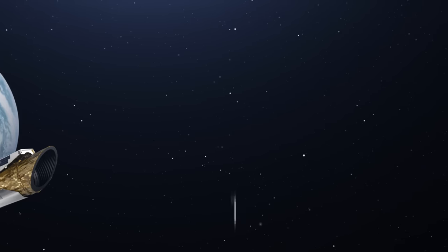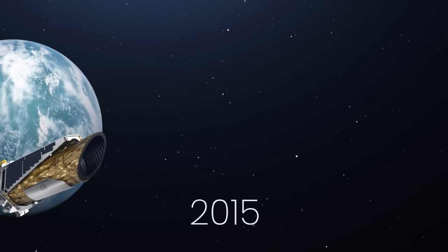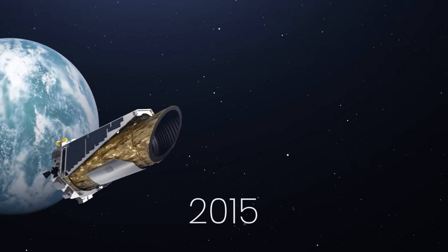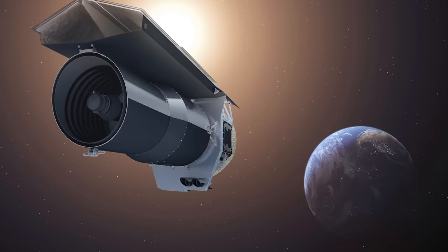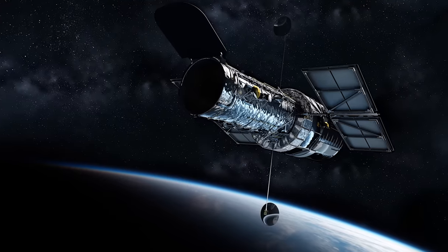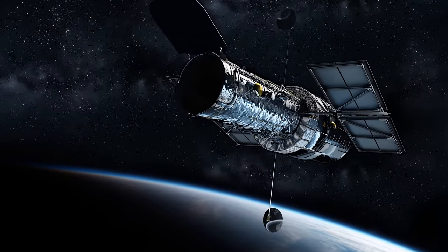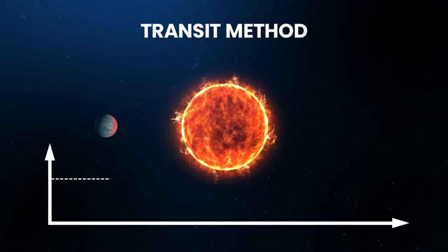Kepler first discovered the planet in 2015, and since then its composition has been studied using other telescopes, like the Spitzer and Hubble Space Telescope. Kepler mainly used what's known as the transit method for exoplanet hunting.